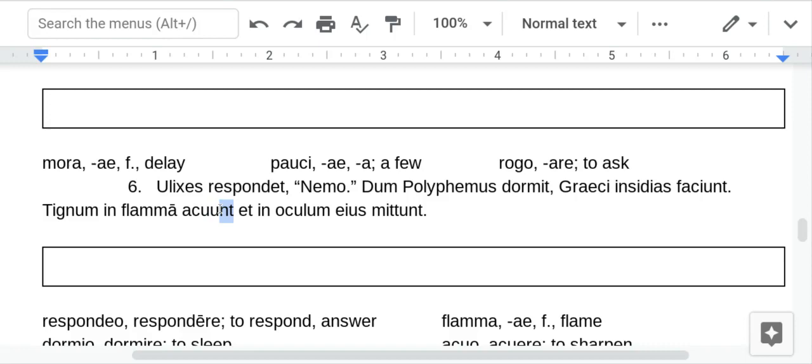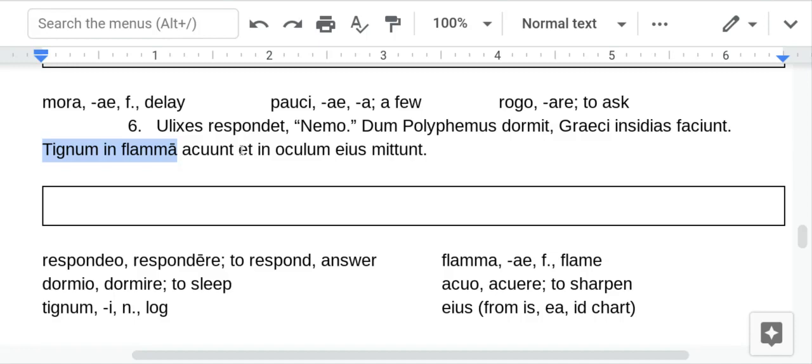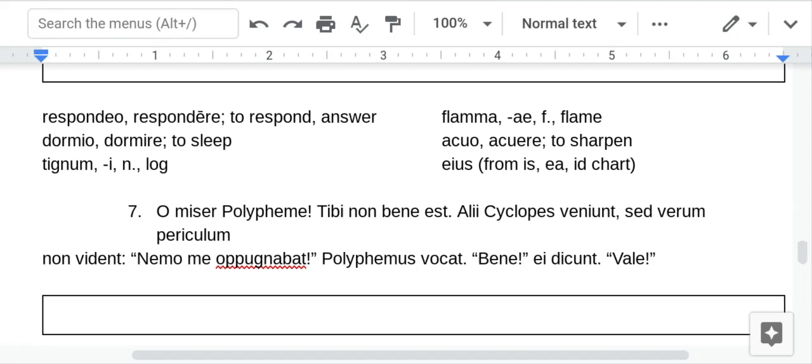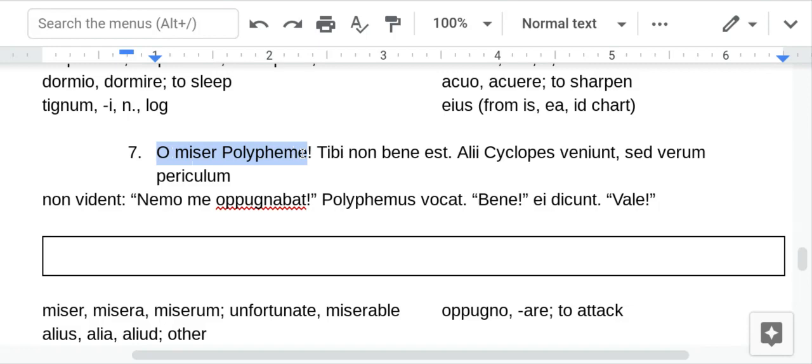They sharpen. Let me get the subject out of the verb ending here. They sharpen a log in flame. And they send. And you can insert, like, it here. And they send it into his eye. And Eos is from that new chart also. Which I told you down here. And it's the genitive case. So, his. Or of him. And they send it into his eye. He's only got one eye. So, it's not good.